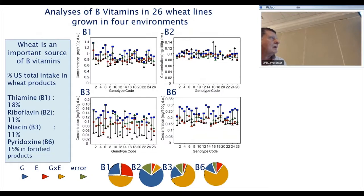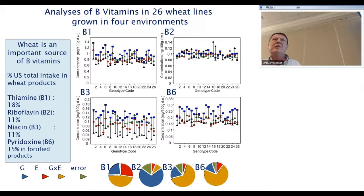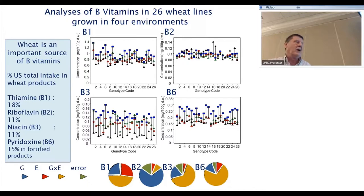We've also looked at more B vitamins using the G×E data set. For vitamin B3 there's almost no effect of genotype — very strong environmental effect, so almost no difference between varieties but a very big environmental effect. For vitamin B2 we have a much tighter data set but with a strong effect of genotype — not much variation but strong genetic control. So we can start picking some of these outliers, slightly high and slightly low types, and start doing some selection.